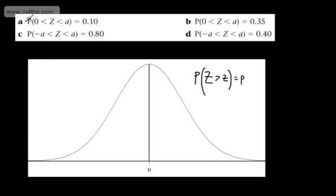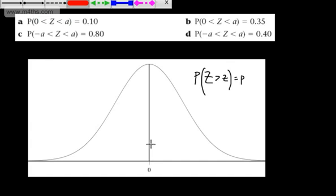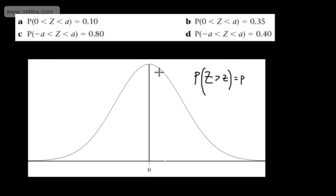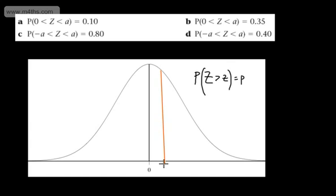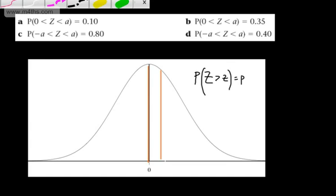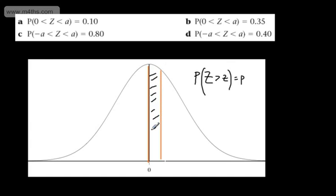In the first question, it says the probability that Z is between 0 and A is equal to 0.1. Let's draw this up. This sliver right here is given to have an area or probability of 0.1. We need to find the value here, which is given to be A.